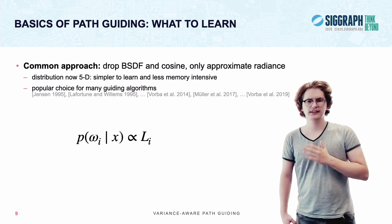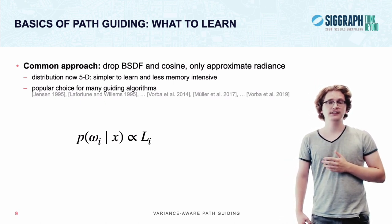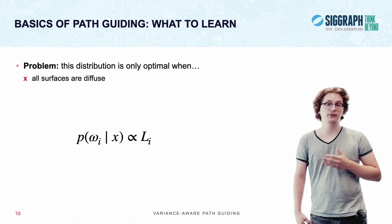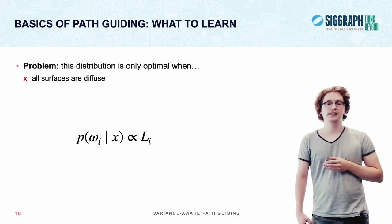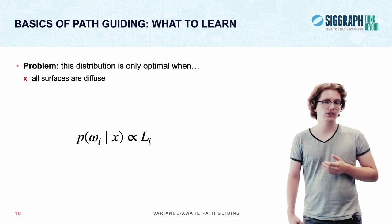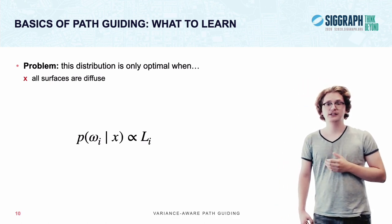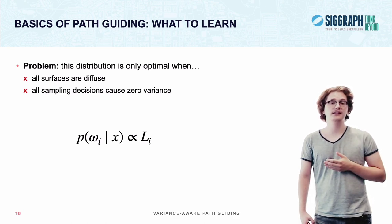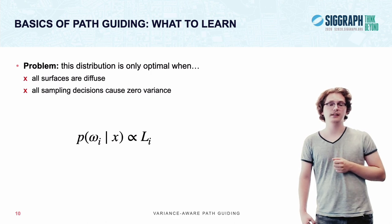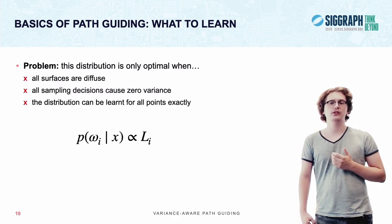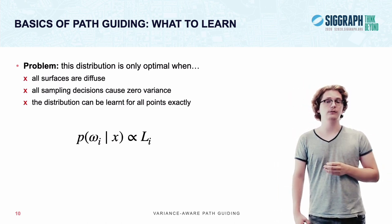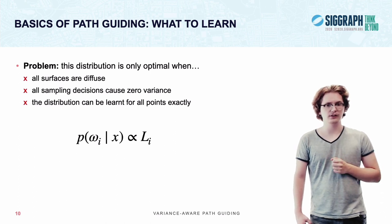However, this distribution doesn't come without problems. For instance, it makes a few assumptions to be optimal. One of the assumptions that it makes is, it assumes that all surfaces in your scene have to be diffuse in order for it to be optimal. Now, for most scenes that's obviously not the case. Also it assumes that all following sampling decisions would be optimal, there have to be zero variance for this distribution to be optimal as well. And, last but not least, this distribution also assumes that it can be learned perfectly for each point in your scene, which is, practically speaking, also typically not possible.